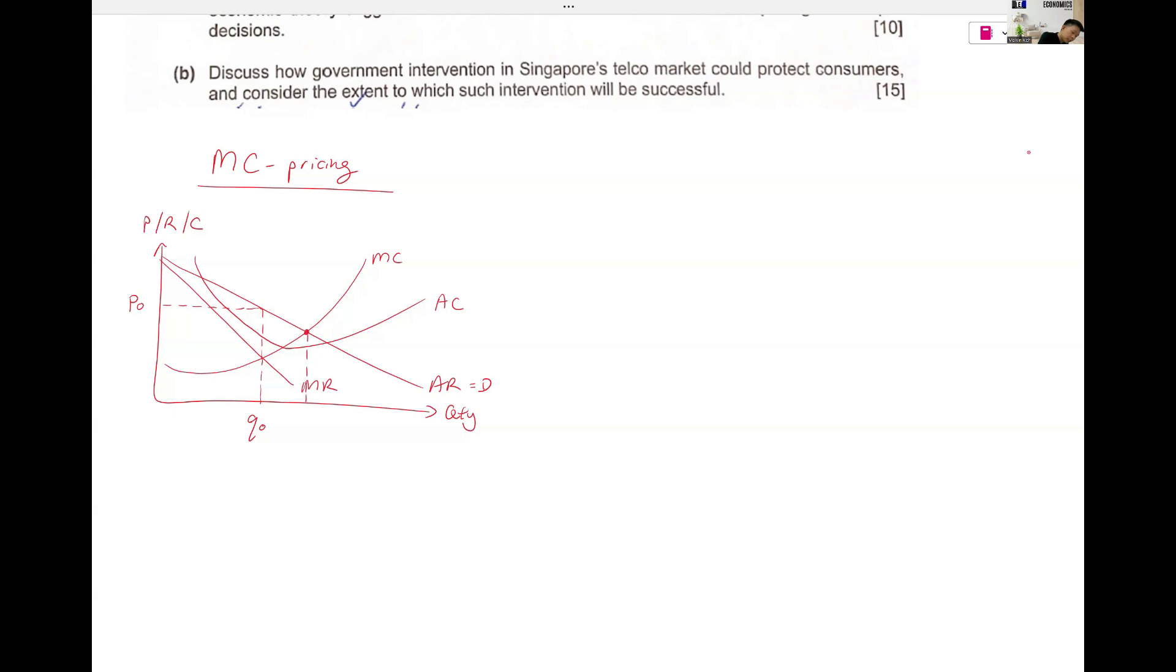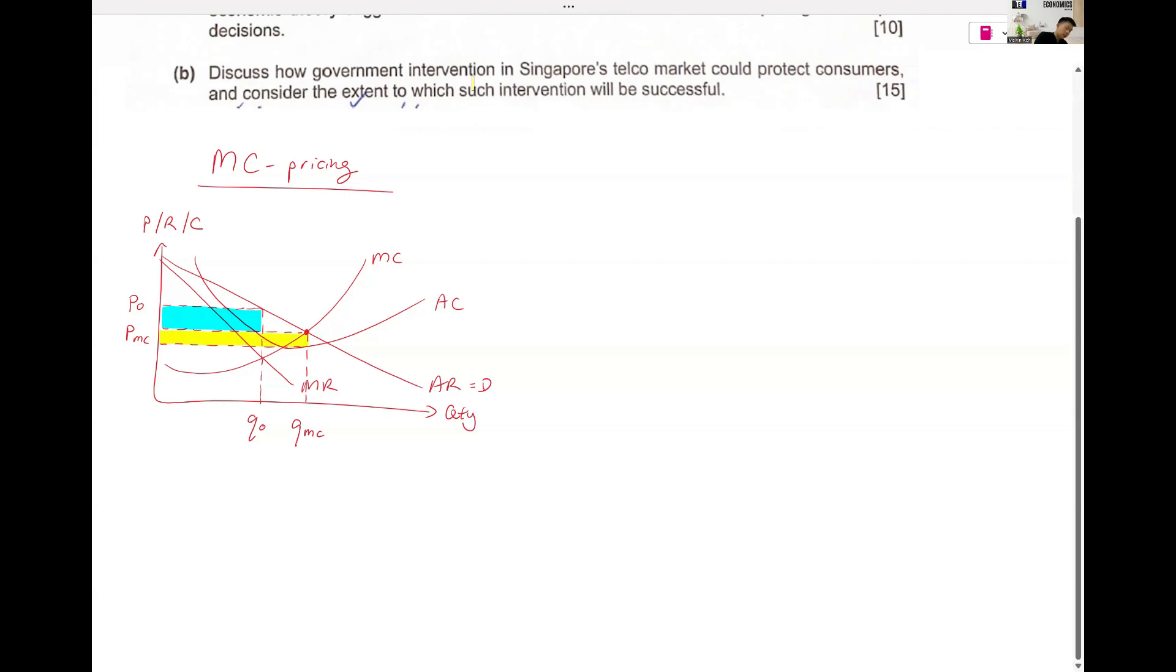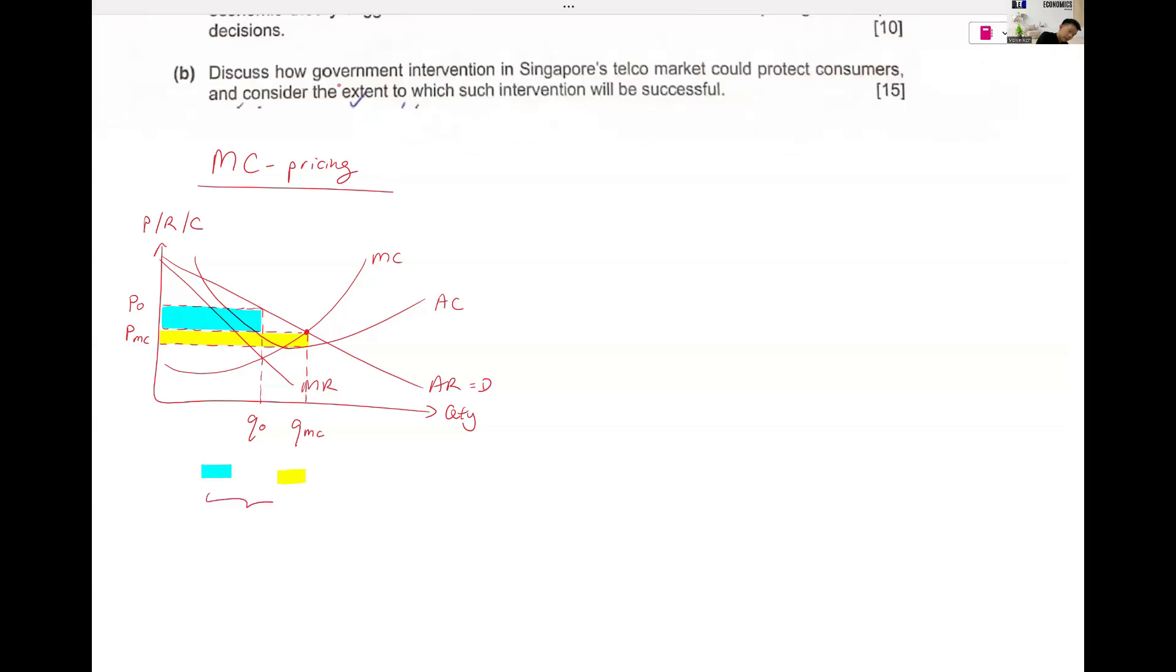MC pricing brings the output here and the price here. So your supernormal profits were so much. Then now it's less.